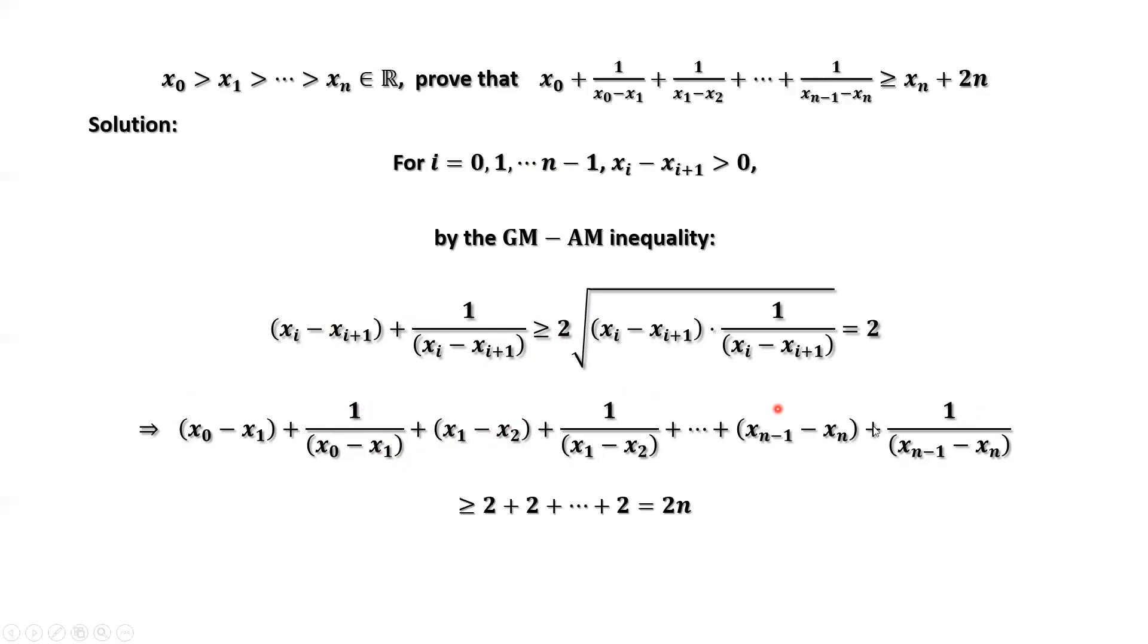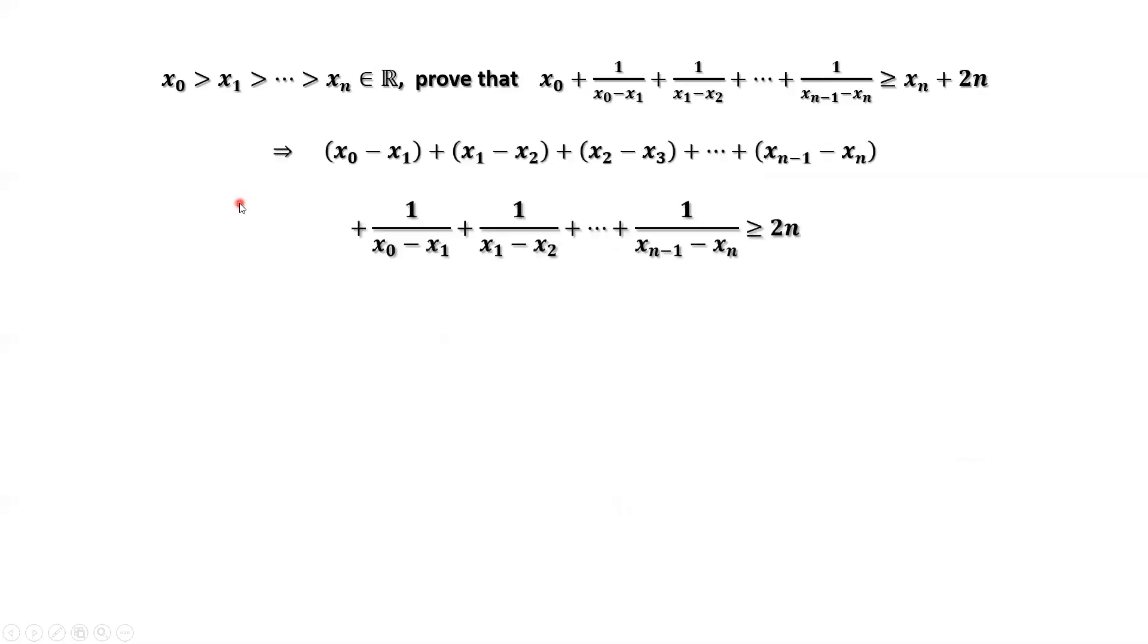Therefore, this summation equals 2 plus 2 plus 2. How many twos here? n, which equals 2 times n. We can rewrite this summation as the following. We put all fractions together.